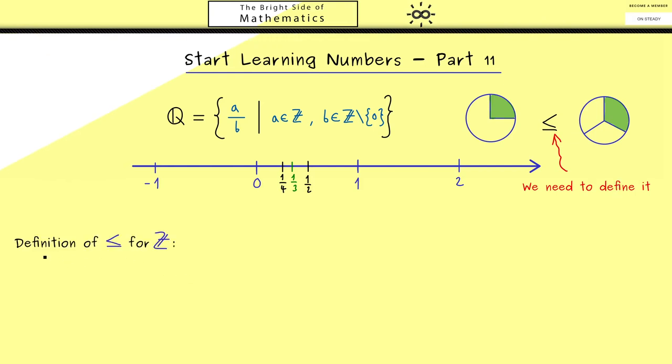First, let's recall how the ordering was defined for the integers. Indeed, it's completely the same definition we had for the natural numbers. Hence, a is less or equal than b if there exists a k in N₀ such that a plus k is equal to b. Of course, this makes sense because adding positive numbers means we jump to the right.